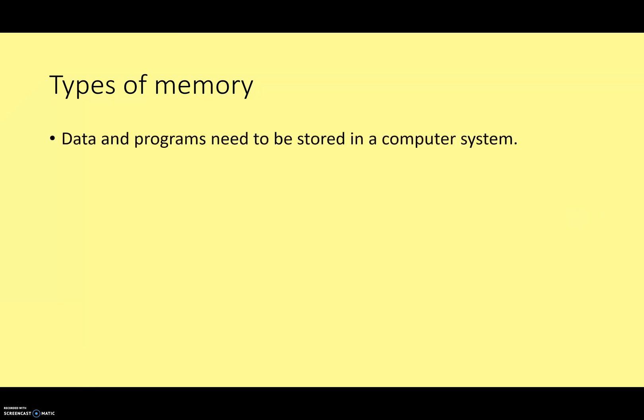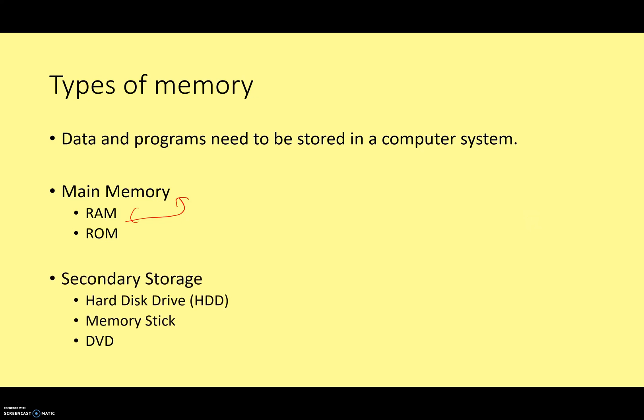Why do we need types of memory? If you think back to our classic von Neumann architecture from the first lesson in this series, you'll remember that data and programs need to be stored in a computer system. We're going to divide into two categories: main memory, which contains RAM and ROM, and secondary storage, which includes things like your hard disk drive, memory sticks, and DVDs, used for more long-term storage.